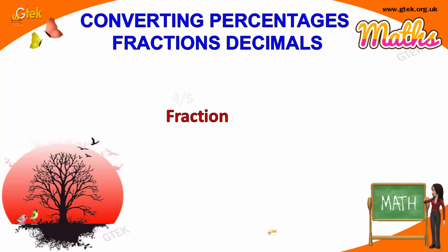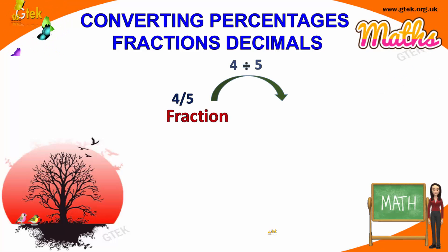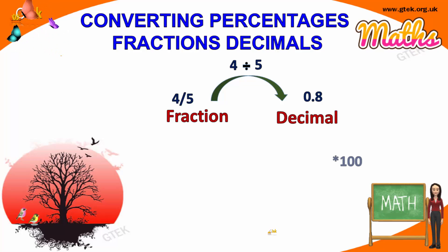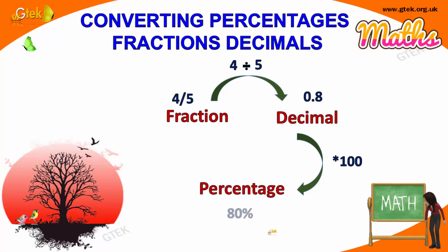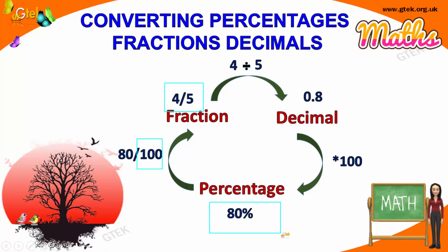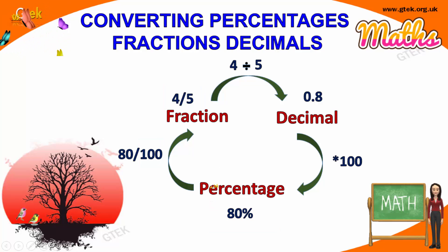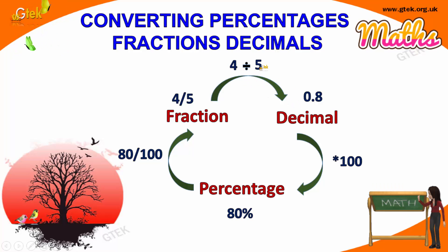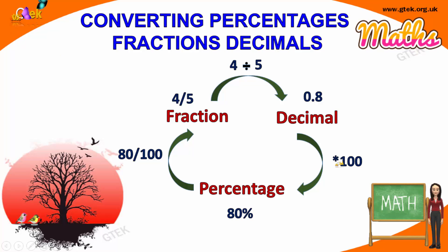Now we will see how to convert a fraction or decimal into a percentage. Take 4 divided by 5. You need to convert it in terms of 100 to get the percentage. So 4 into 20 is 80, and 5 into 20 is 100, giving 80 by 100, which is 80%. Alternatively, 4 divided by 5 is 0.8, and multiplying by 100 gives you 80%.